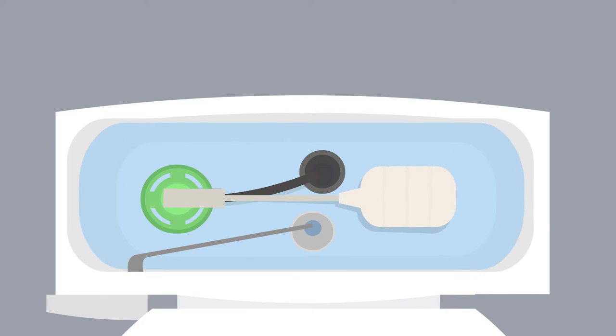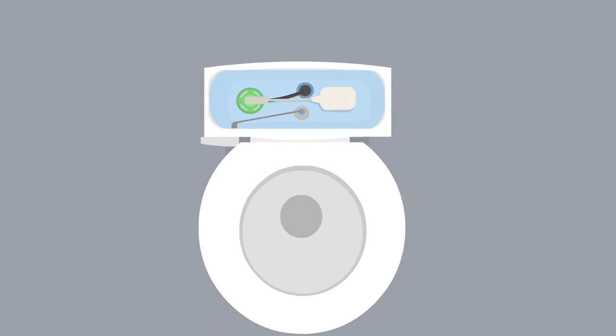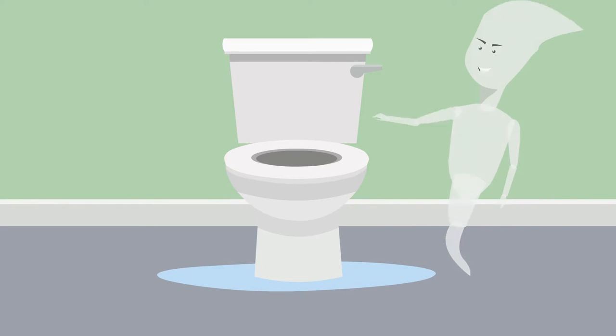Leaks can be caused by an overflowing fill device, a bad seal between the floor and toilet base, or a bad flapper seal which can cause phantom flushes.